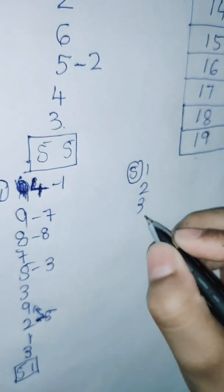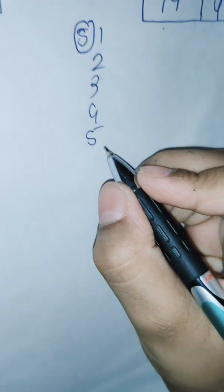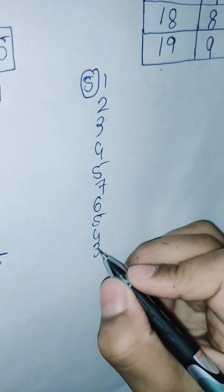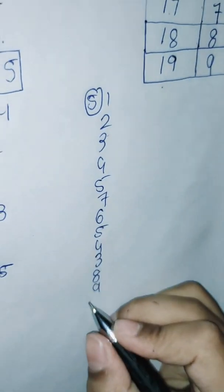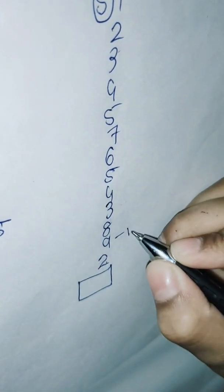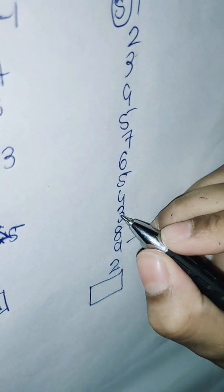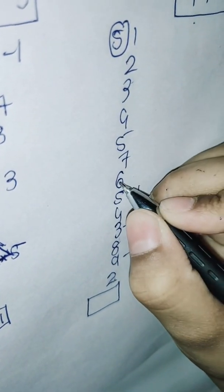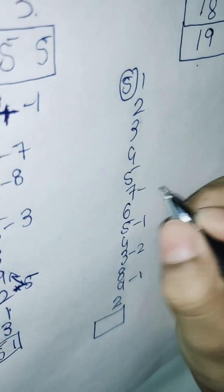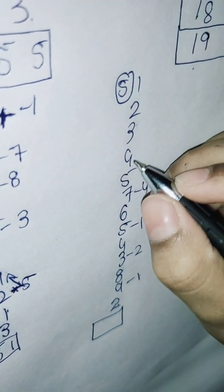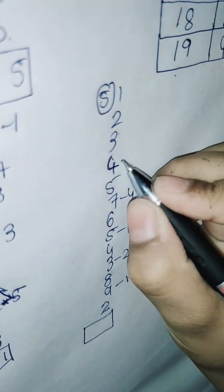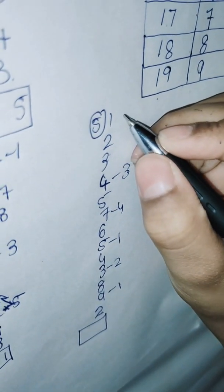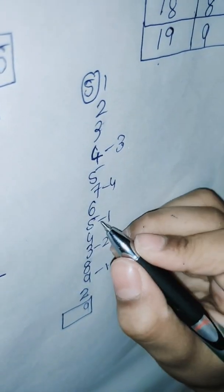The fifth sum: 1, 2, 3, 4, 5. 7, 6, 5, 4, 3, 8, 9, 2. 2 plus 9 equals level. 1 plus 8 equals 9. 9 plus 3 equals 12. 2 plus 4 equals 6. 6 plus 5 equals level. 1 plus 6 equals 7. 7 plus 7 equals 14. 4 plus 5 equals 9. 9 plus 4 equals 13. 3 plus 3 equals 6. 6 plus 2 equals 8. 8 plus 1 equals 9. Write 9 and count the dashes: 1, 2, 3, 4, 5. Write 5.